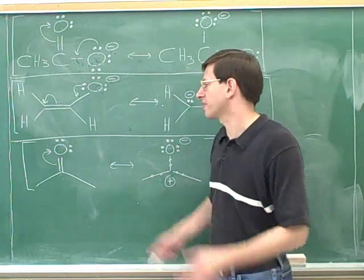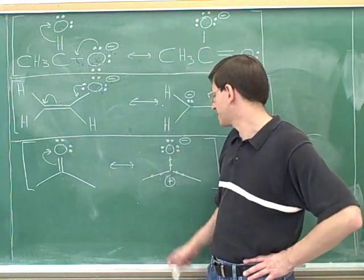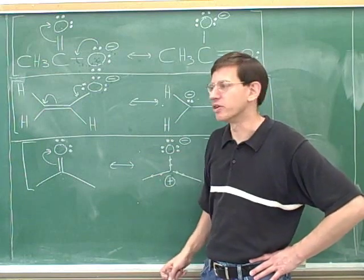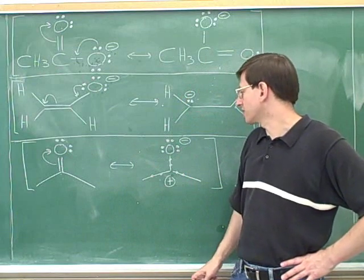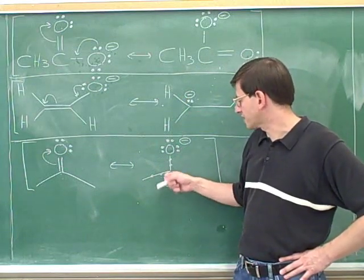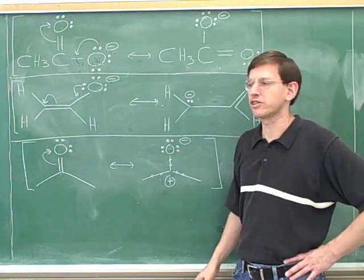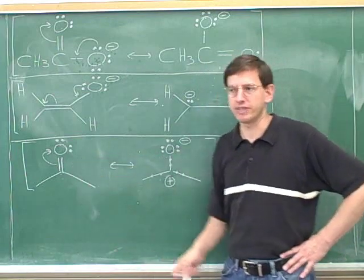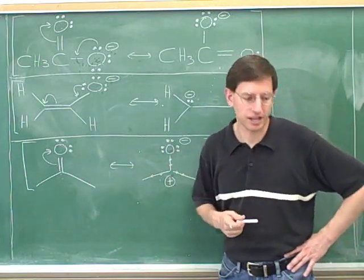There are also other reasons for expecting an attack on this carbon besides this resonance structure, so resonance is not the only way to analyze this. But certainly the resonance helps us see why this carbon is reactive and can be attacked by a molecule that wants to donate electrons — even though this resonance structure is less significant than the one on the left. It was still very important to draw it in order to predict how the molecule was going to react.